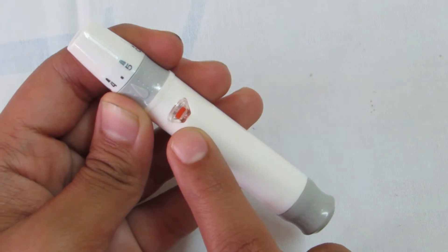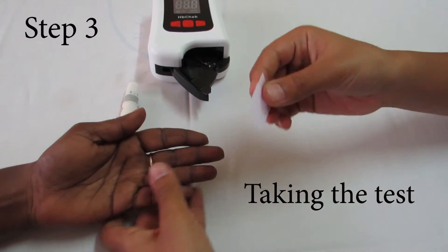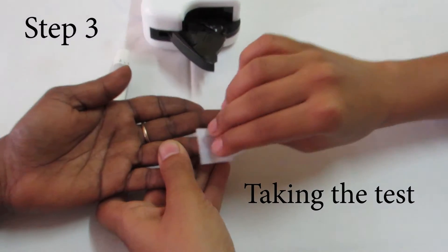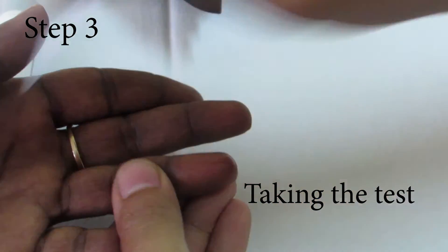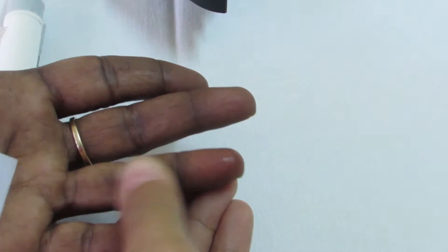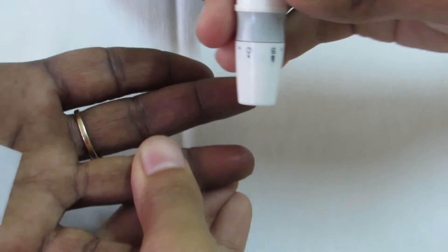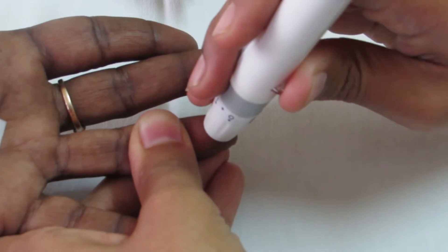Step 3: Taking the test. Using an alcohol swab, wipe the finger of the patient you wish to prick. Then place the alcohol swab on the palm of the person. With the lancing device, prick the person's finger and draw the first drop of blood.